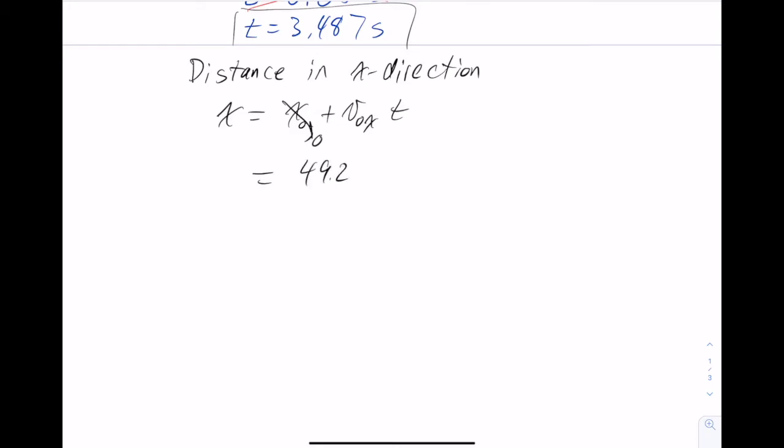And so v0x was 49.2 meters per second, and then we are multiplying that by the time that we just found, which is 3.487 seconds. And that gives us a distance of 171.6 meters,